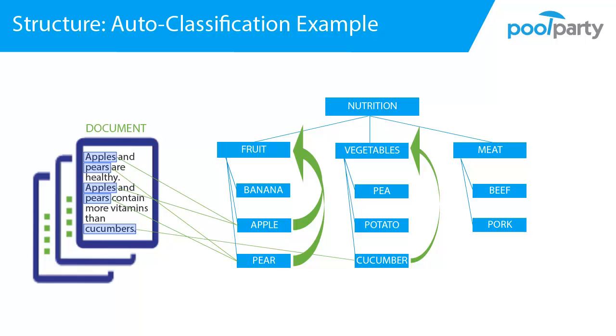In our example the PoolParty Extractor would automatically classify our document as fruit. We have a text about fruit. Even though the concept fruit is not mentioned once in the text, the PoolParty Extractor will still know that the text is about fruit. Because it uses your thesaurus structure to derive additional information.